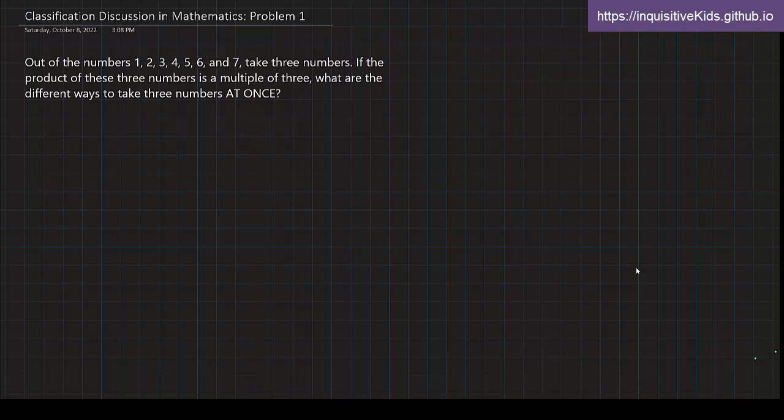We're being asked, out of those numbers 1, 2, 3, 4, 5, 6, and 7, take three numbers. If the product of these three numbers has to be a multiple of three, what are the different ways to take the numbers at once?